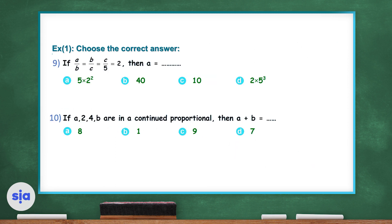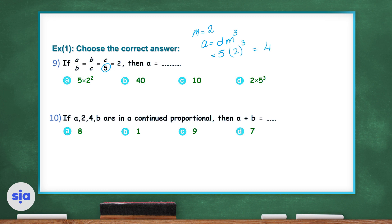Question 9 says: if a over b equals b over c equals c over 5 equals 2, then what is the value of a? Here m equals 2, and we know that a equals d times m to the power of 3. This 5 is the d. So a equals 5 times 2 to the power of 3, which gives 40. The right choice in question 9 is choice B.